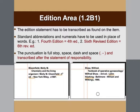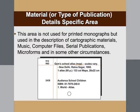The third area, material or type of publication specific details, is not used for printed monographs but is used for cartographic materials, music, computer files, serial publications, microforms, and other relevant circumstances. In the example, the term 'map' is mentioned in square brackets after the title to clearly specify that the material belongs to cartographic materials.